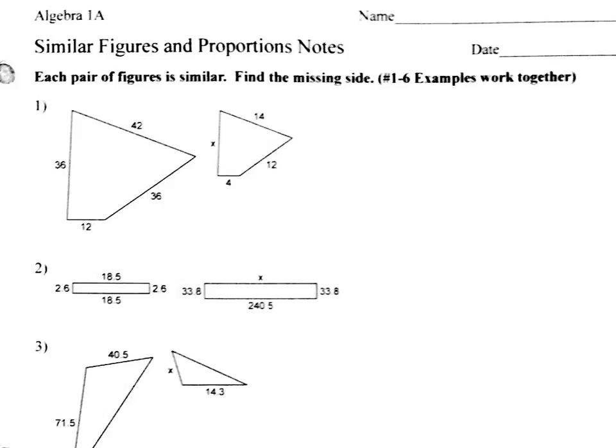This side and this side are two sides that go together, so that gives us our first ratio. Then we want to take the one that we are missing or looking for, in this case which is X. We've got to find which side it goes with, which is over here, 36.